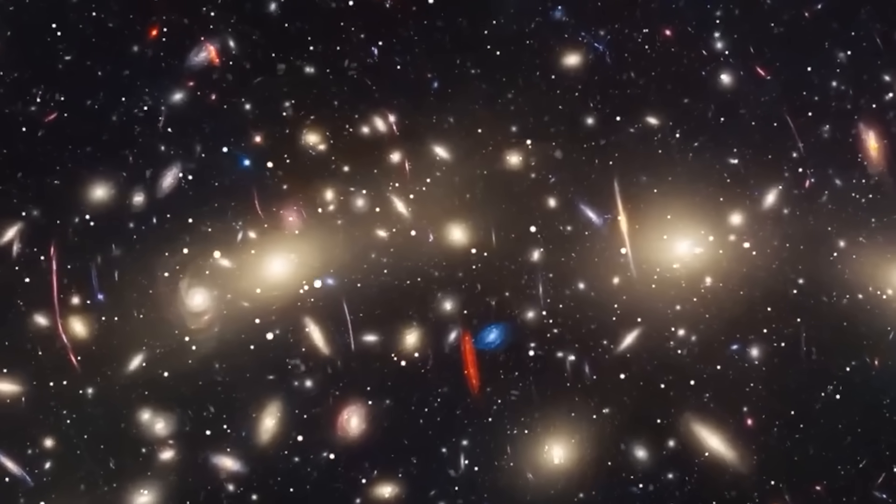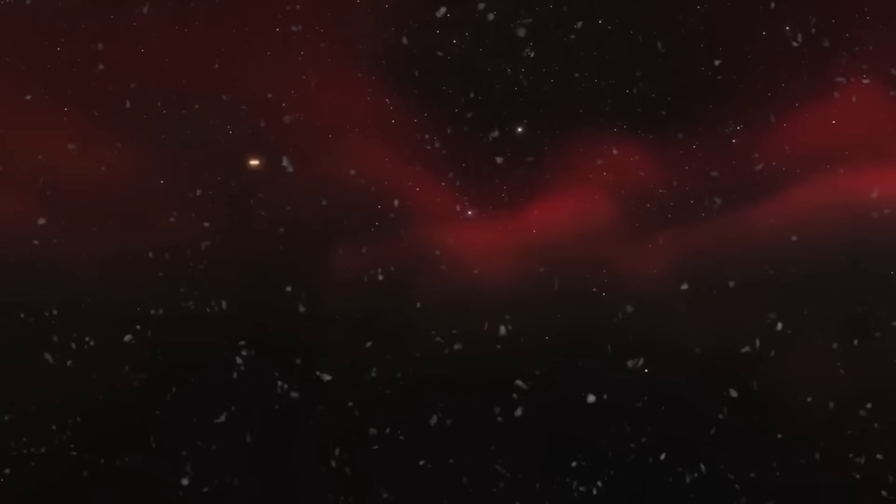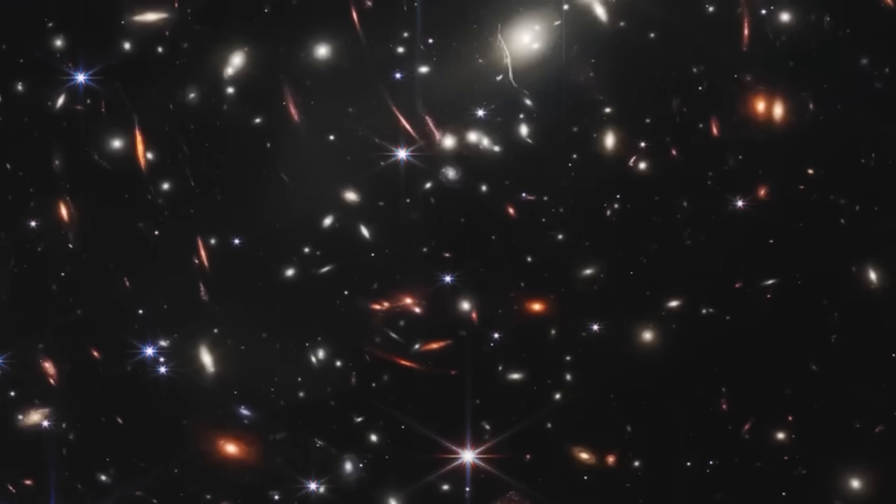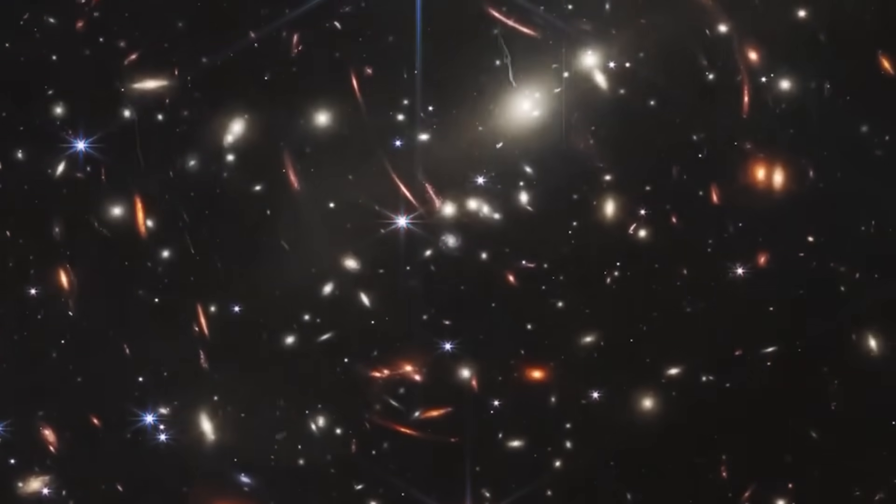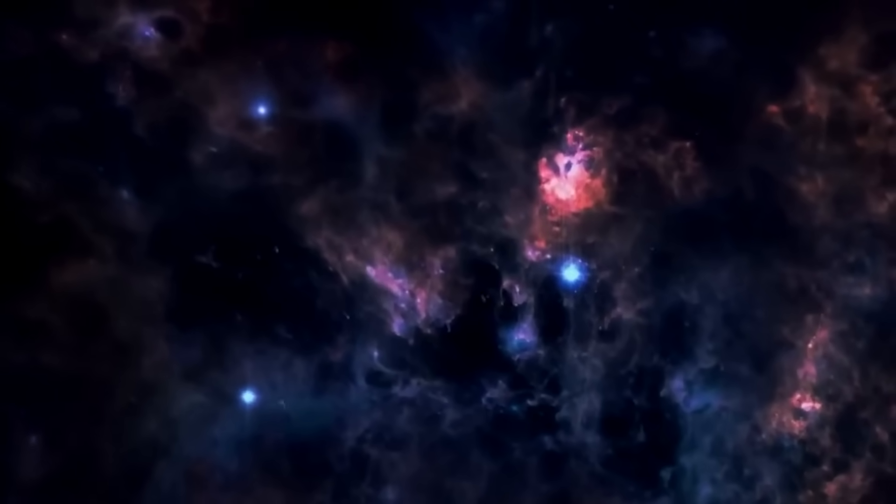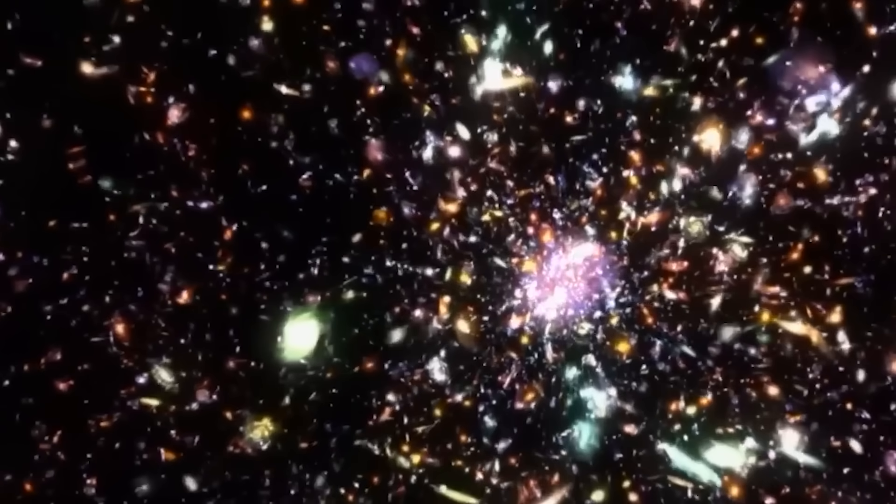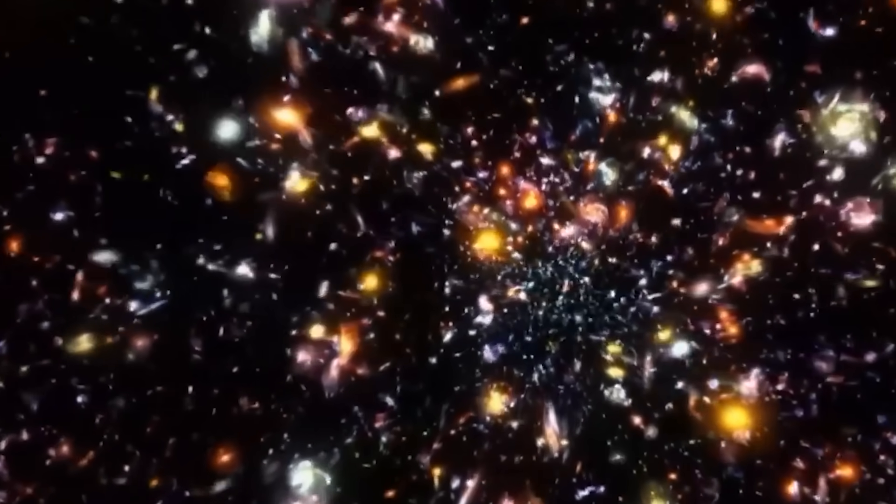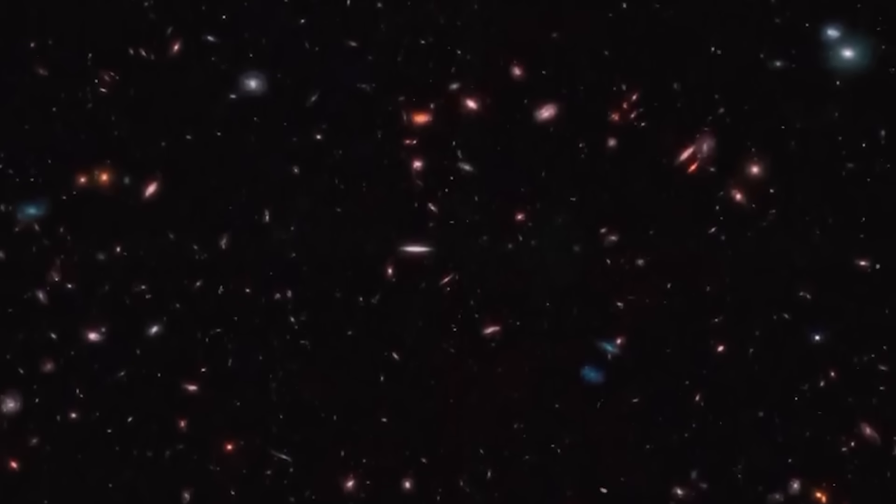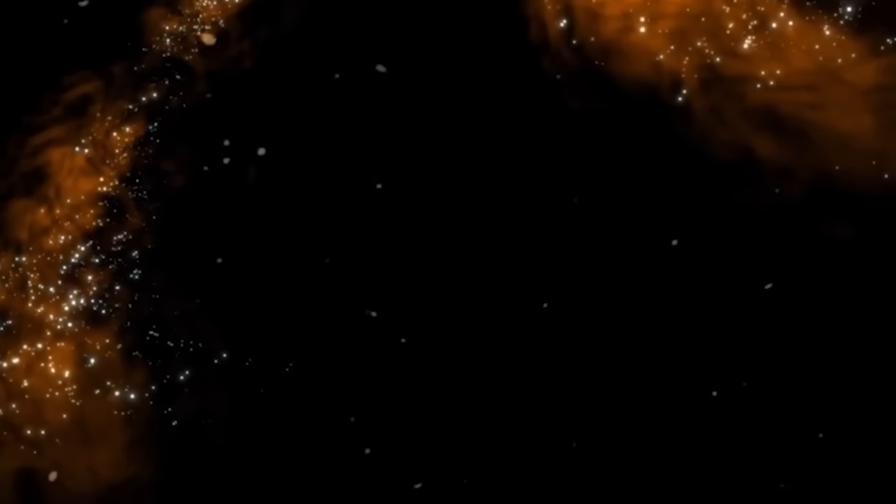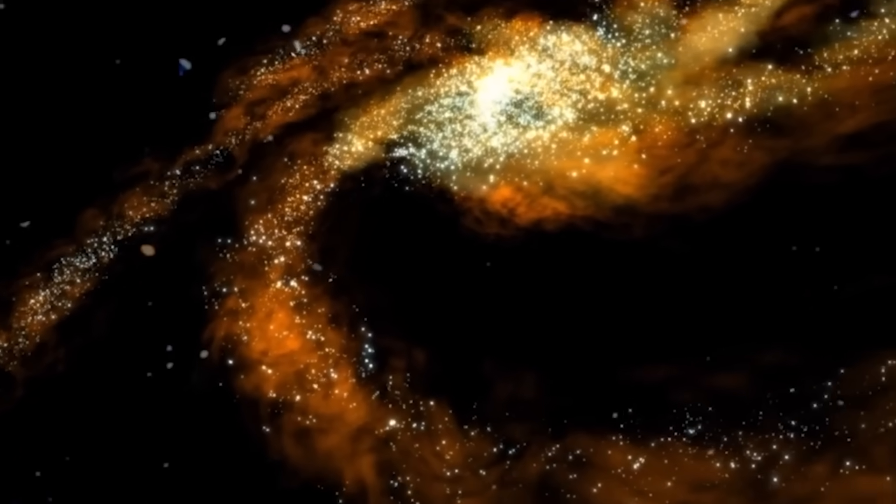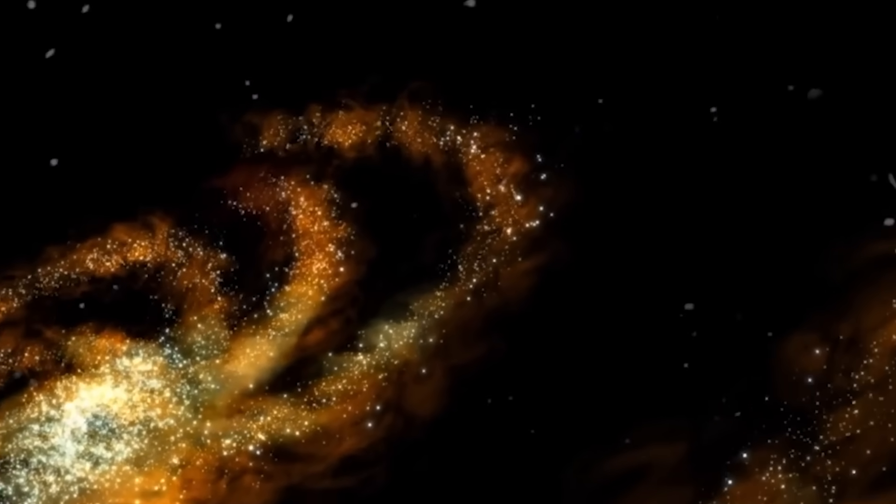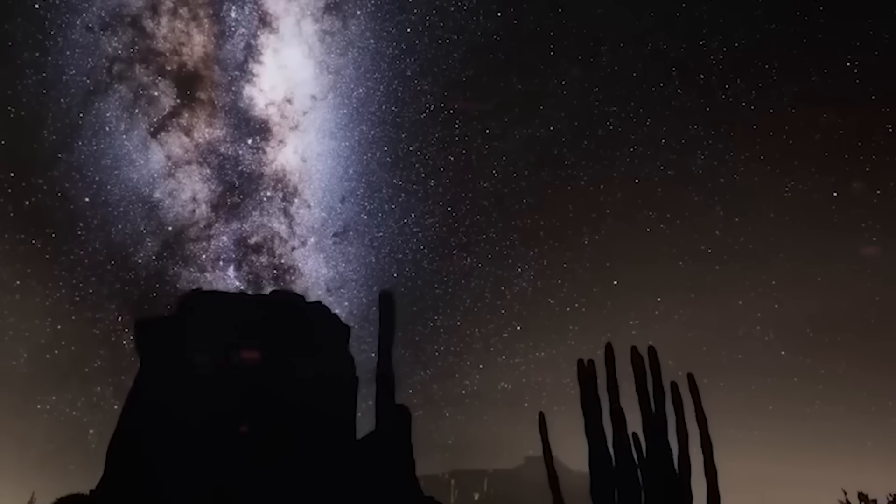It's called the multiverse hypothesis. According to this idea, our universe is just one bubble in an endless cosmic foam, each bubble representing a separate universe with its own physical laws. Sometimes these universes might collide or interact, creating brief bridges through which energy or light could pass. If that ever happened near the dawn of our own universe, it could explain why Webb is detecting galaxies that seem to exist outside our timeline.